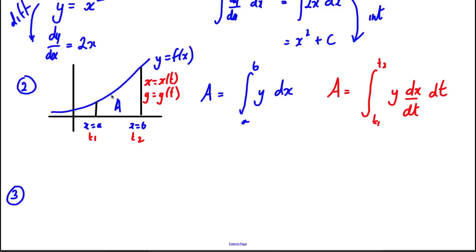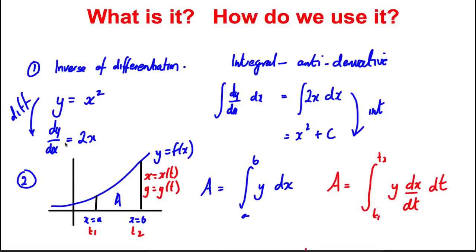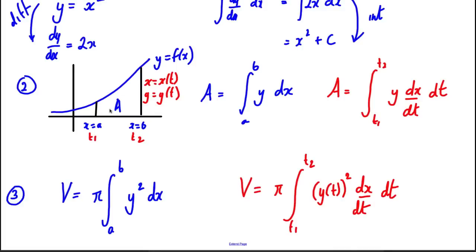We also use integration to work out volumes of revolution. If we sweep the area around 360 degrees around the x-axis, the volume is the integral between a and b of pi y squared dx — so we square the function, integrate it, and multiply by pi. Parametrically, the volume is the integral between t1 and t2 of y(t) squared times dx/dt dt.